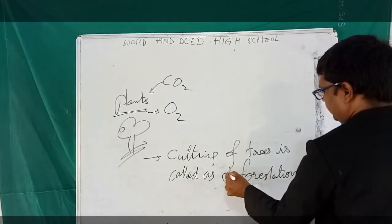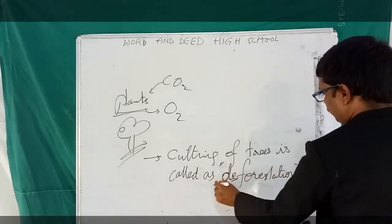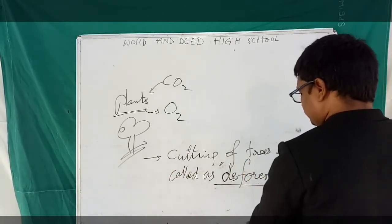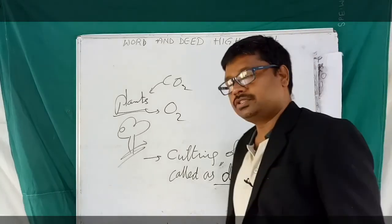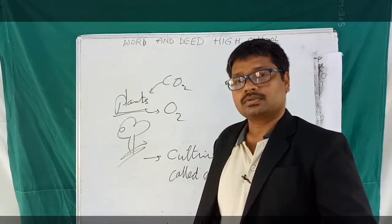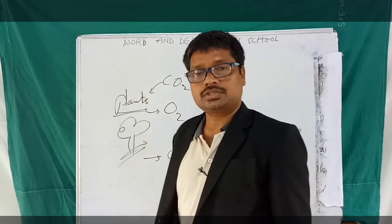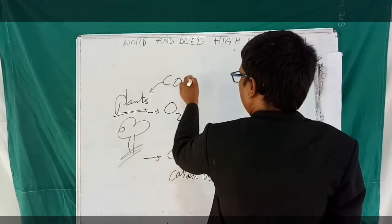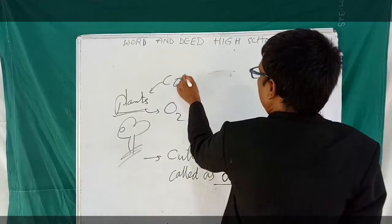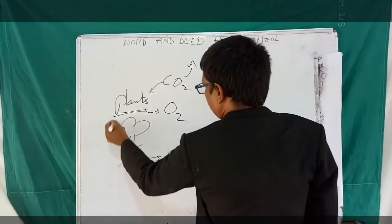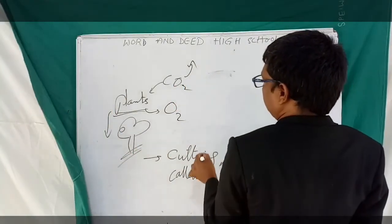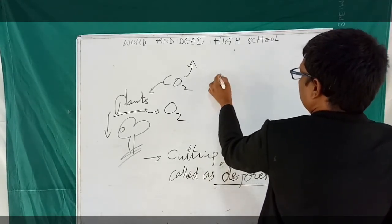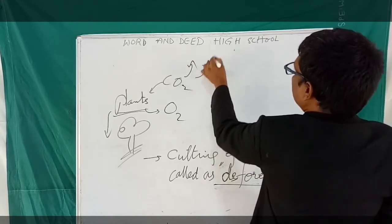Students, remember what deforestation is — it is caused by cutting down of the trees. If we keep cutting trees, that process is called deforestation. In the process of deforestation, if there are fewer trees, the amount of carbon dioxide in the atmosphere will increase. If there are fewer trees, the amount of carbon dioxide will be increased in the atmosphere.